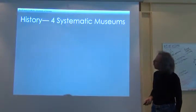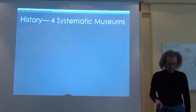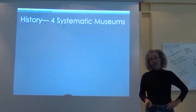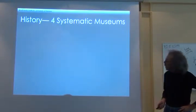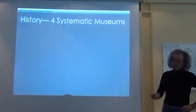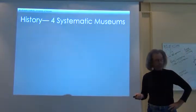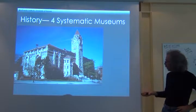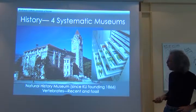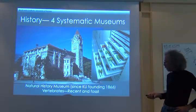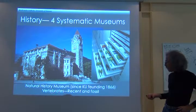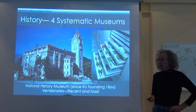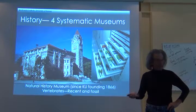The Biodiversity Institute at the University of Kansas has a very long and distinguished history. It began as four separate systematic museums on campus. The first, in a building called Dyke Hall, was called the Natural History Museum. It was part of the original charter of the University of Kansas back in 1866, where the charter said: teach the people of Kansas about nature.